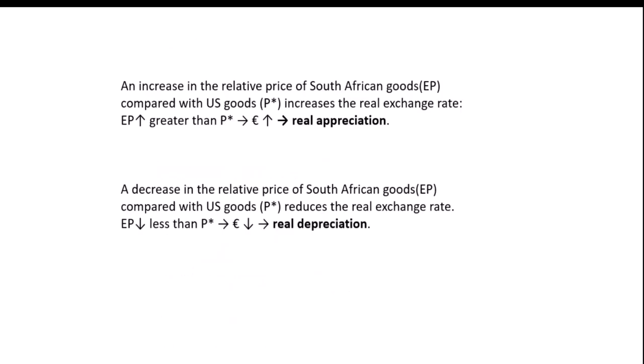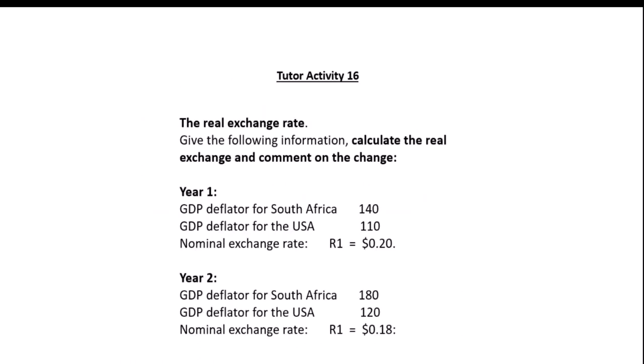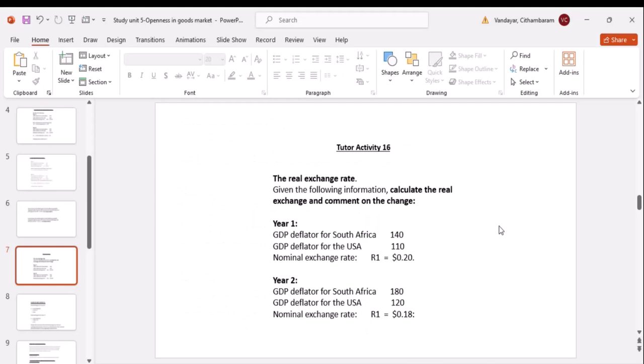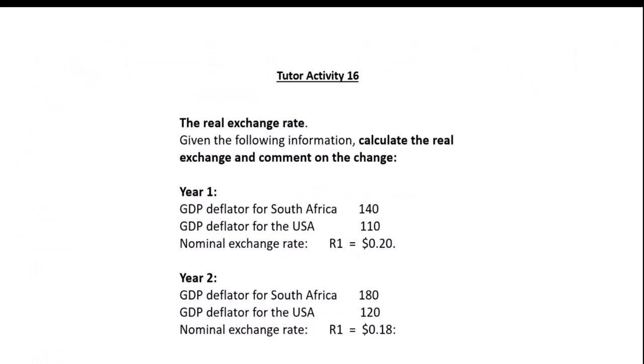Service receipts and payments are also part of the current account: if we receive services from foreign countries we pay for them, and if we provide services to foreign countries they pay us. The capital account balance equals capital flows from the rest of the world minus capital flows to the rest of the world. When capital inflows exceed outflows, it has a positive effect on the balance of payments and the overall economy.